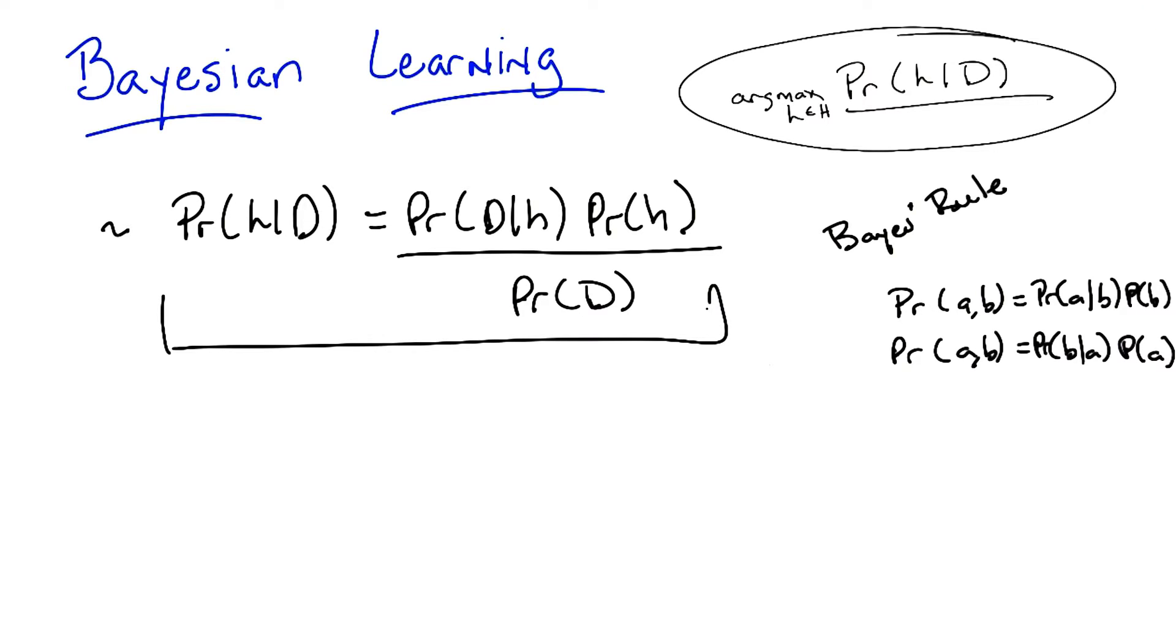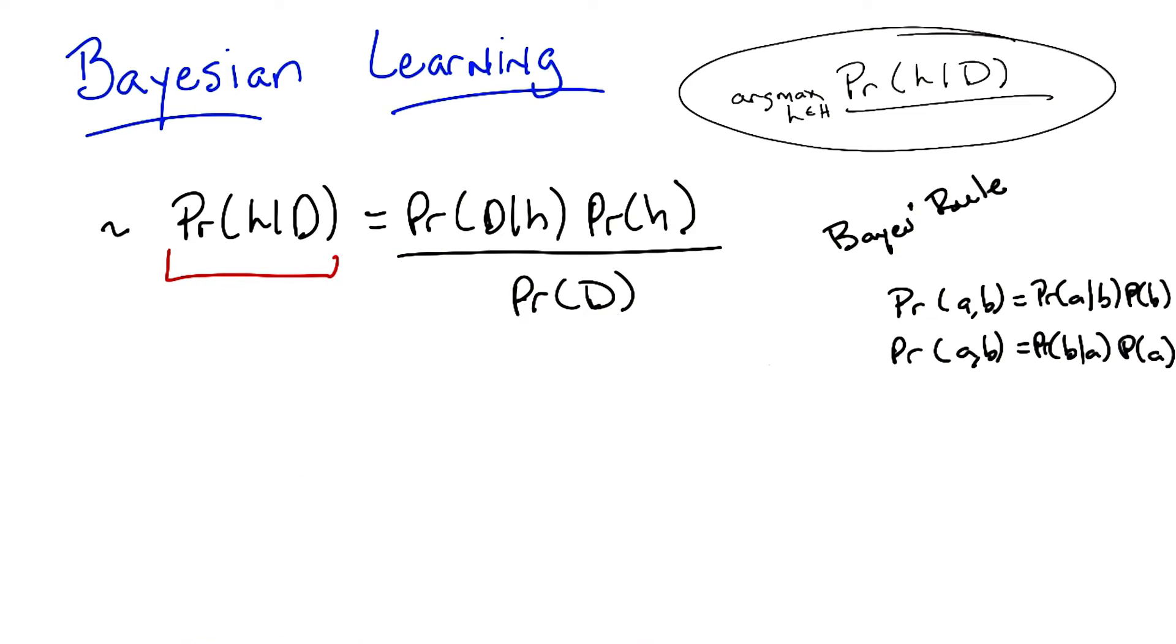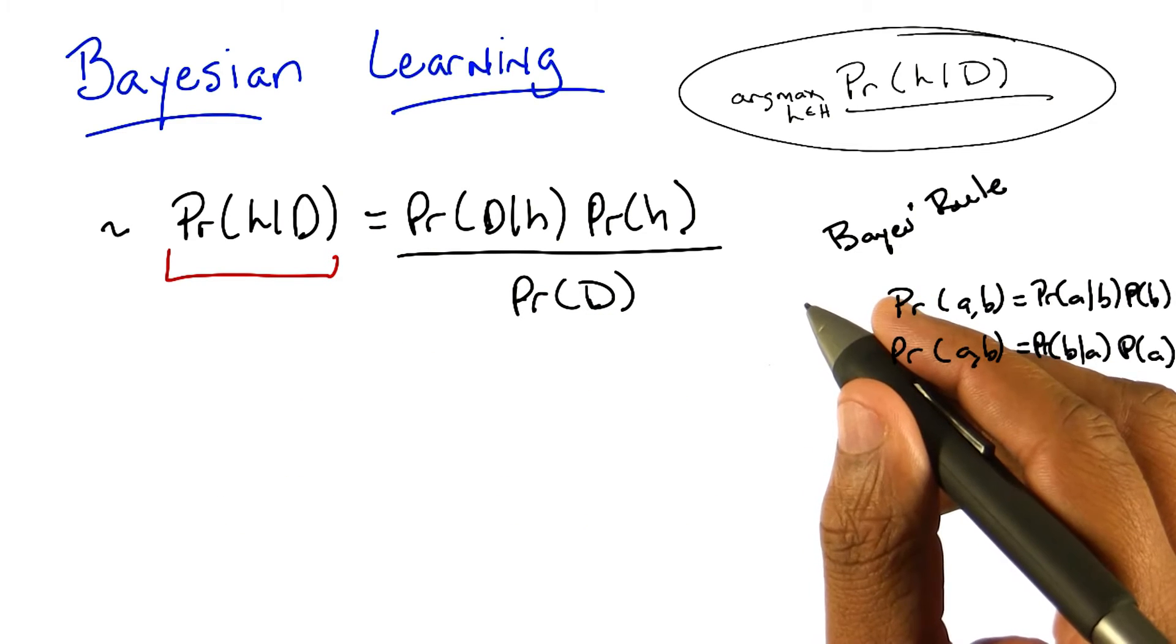But more importantly for machine learning, it gives us a handle to talk about what it is we're exactly trying to do when we say we're trying to find the most probable hypothesis given the data. So let's just take a moment to think about what all these terms mean. We know what this term here means. It's just the probability of some hypothesis given the data. But what do all these other terms mean?